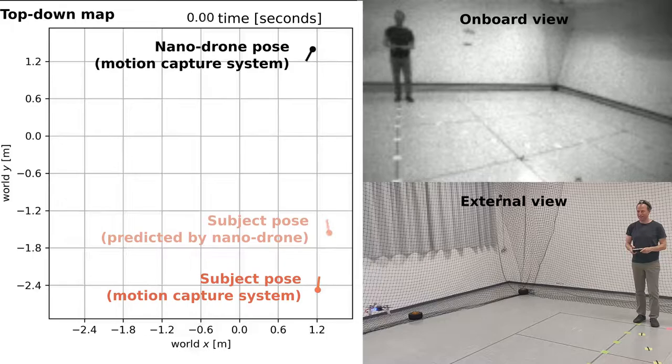On the left side of the video, a top-down representation of the testing field is reported. Both the nano drone's and the subject's true position are shown with solid colors, while the pale marker shows the onboard prediction made by the drone. We play the onboard video stream on the top right side of the video, which feeds the CNN running on the onboard PULP system on chip. Finally, in the bottom right corner, we show the external view of the experiment.